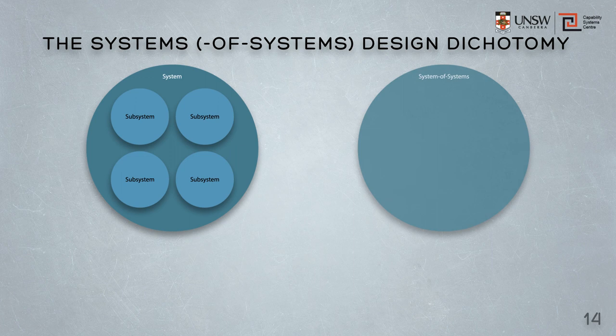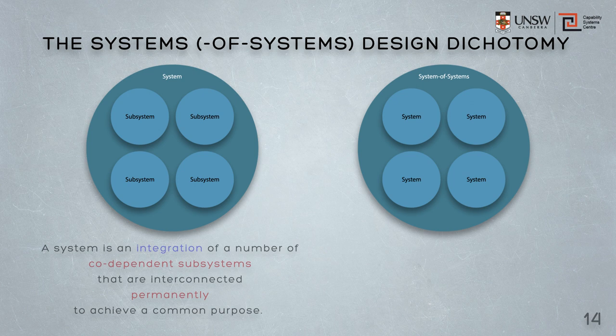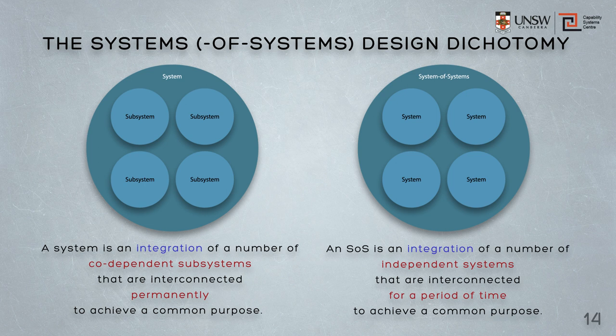So these two diagrams show the difference between a system of elements and a system of systems comprising systems as elements. A system, on the left, is an integration of codependent subsystems permanently interconnected to achieve the purpose of the system. On the other hand, on the right, a system of systems is an integration of a number of independent systems that are interconnected for a period of time to achieve a common purpose. And so a system comprises subsystems that are permanently integrated — tightly integrated, tightly coupled. A system of systems is a loosely coupled collection of systems that come together for a short period of time. Subsystems are not independent; systems are independent.